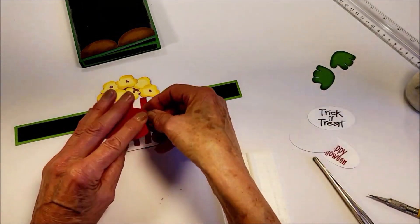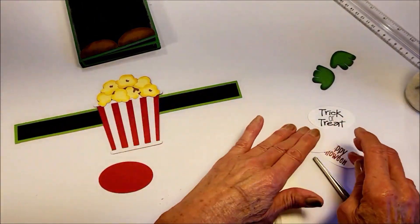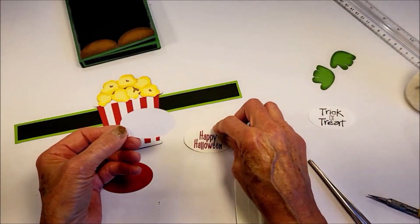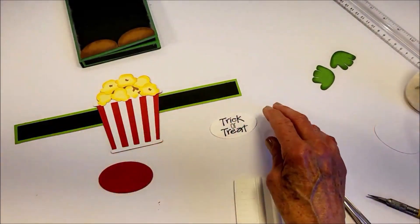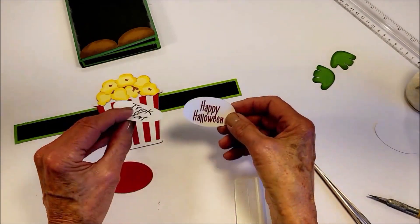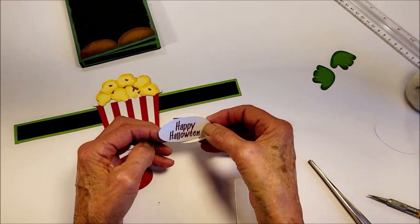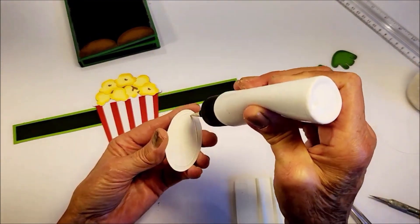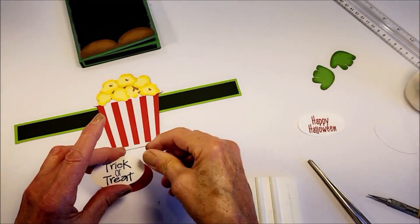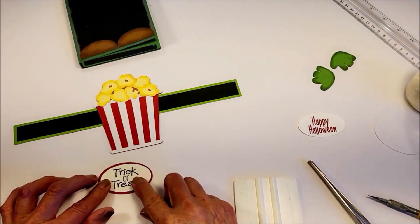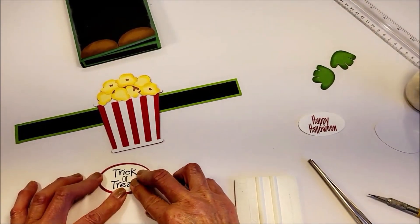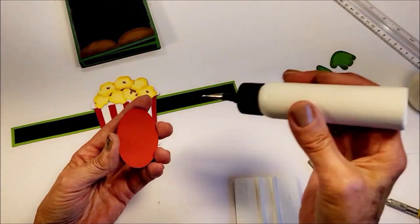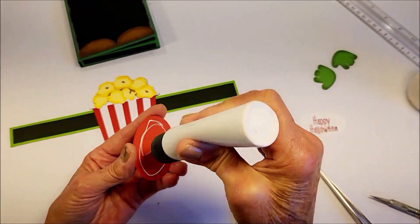Okay, and on the greeting that goes on the front you have a choice. You could use the blank oval that's in the cutting file or you can use one of the print and cut ones for trick-or-treat or happy Halloween. Let's do trick-or-treat. Set that in there and then we'll attach that to the front. You could also pop dot this if you wanted to.